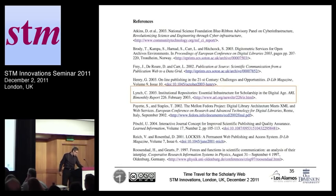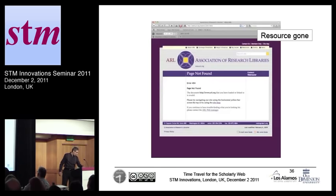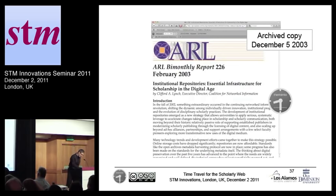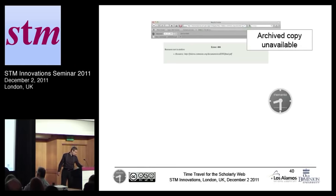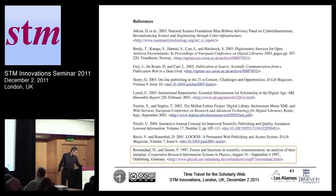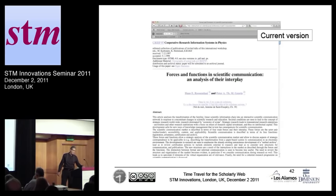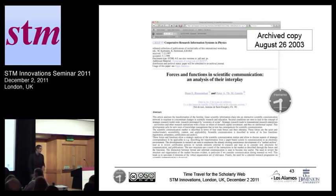Next up: Clifford Lynch, a paper about institutional repositories from the ARL — it's gone. But Memento helps you find an archived copy. Then one by Sandy Piat and Thorny Staples — the resource is totally gone, and unfortunately not even an archived copy exists anywhere. Then Roosendaal and Goertz, a paper about forces and functions in scholarly communication. This is the current one; using Memento we were able to go back in time and find a version from around the time it was published.